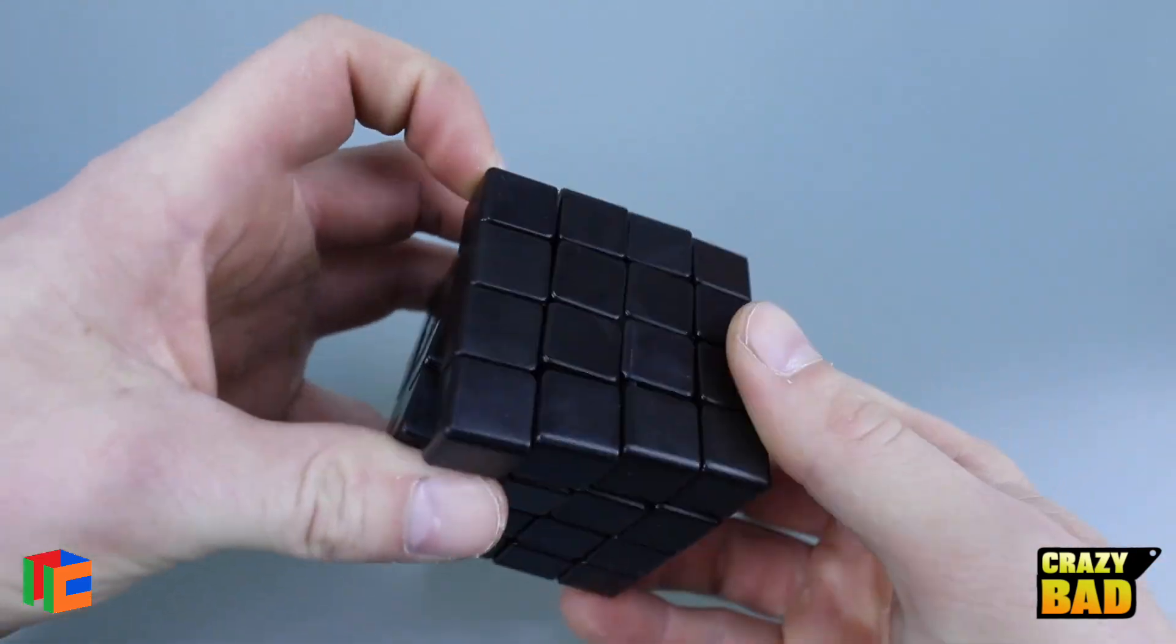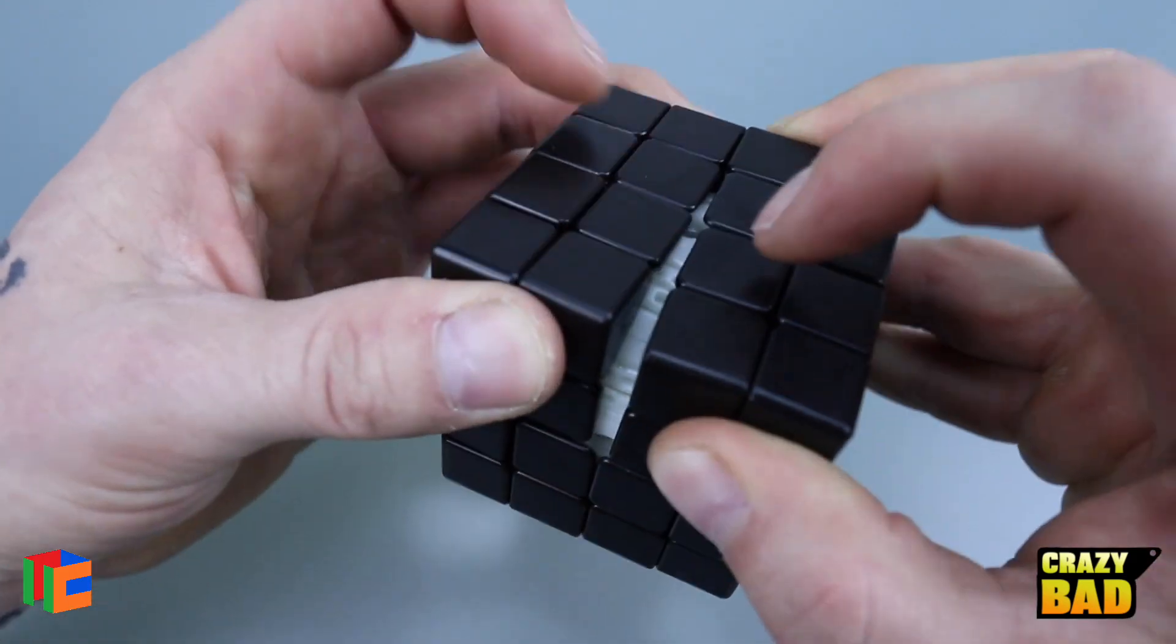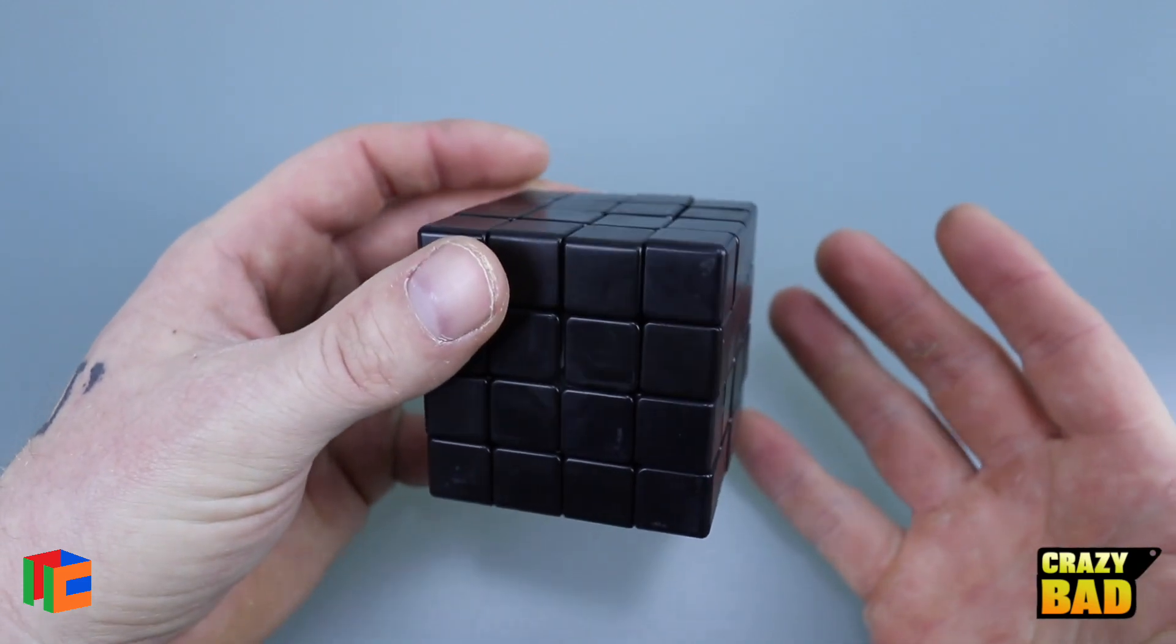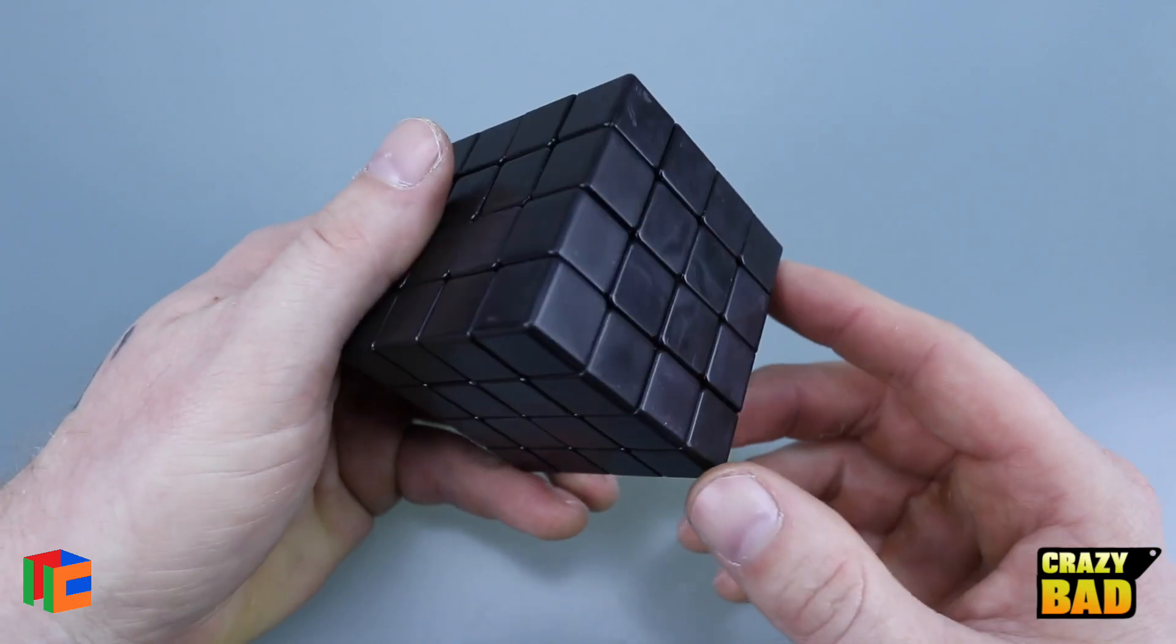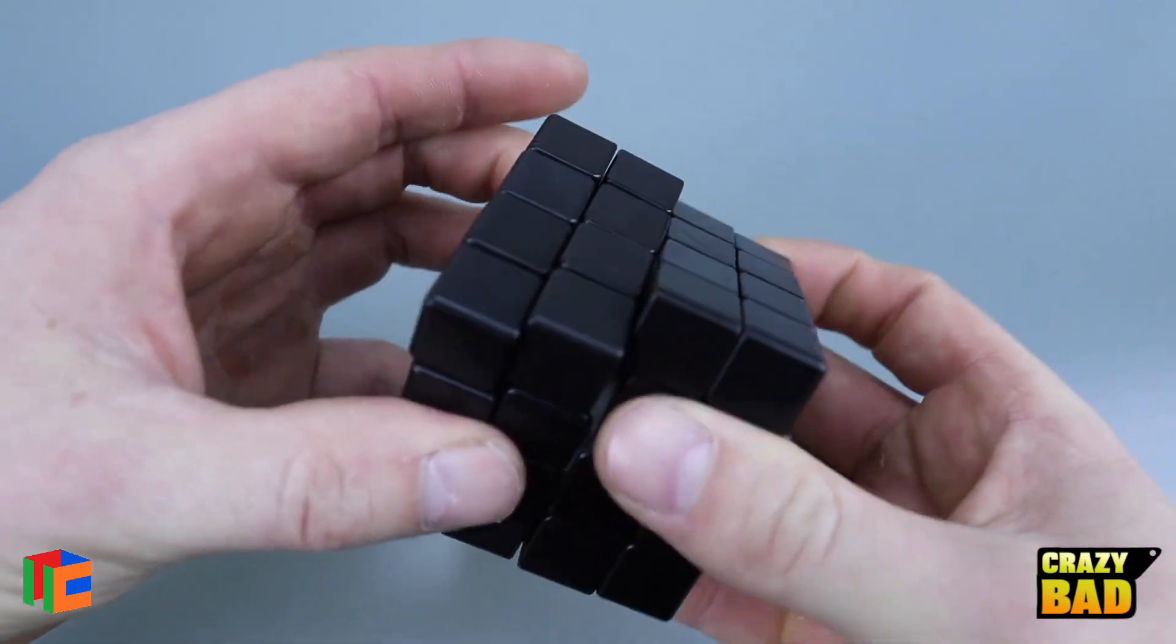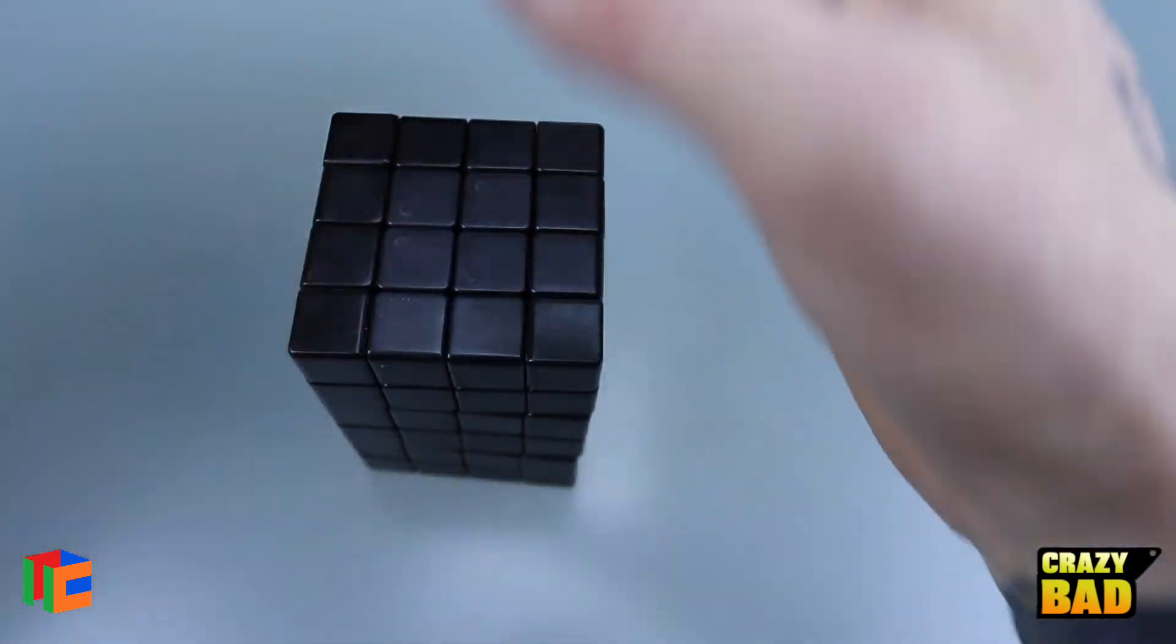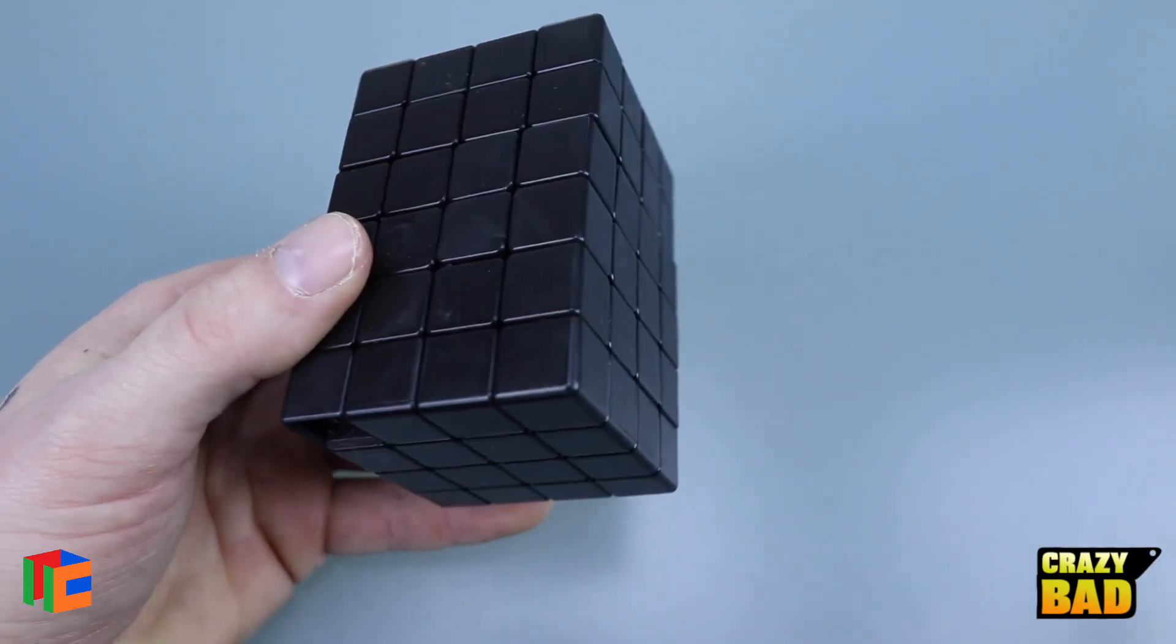People say well would the 4x4 be good, and the answer is no, it is not a good 4x4. The reason for that is because you have double the amount of wing edge pieces on the inside. There's absolutely no reverse corner cutting whatsoever with this and it just locks up, not to mention you will pop it very easily if you were to speed solve this thing.